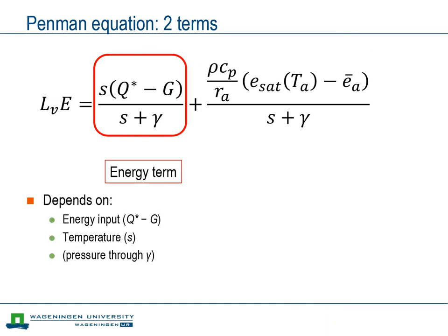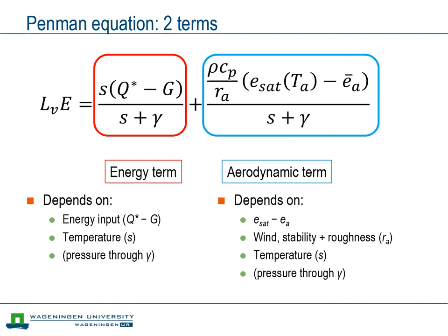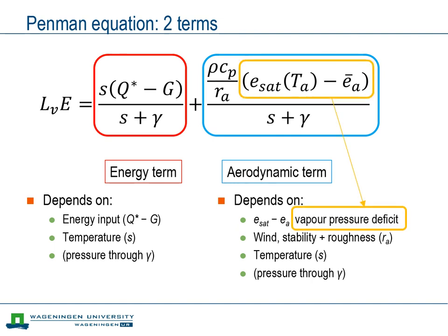So what do these terms depend on? The energy term depends primarily on the available energy, and furthermore temperature has an effect through the slope of the saturated vapor pressure function. The aerodynamic term primarily depends on the difference between saturated vapor pressure and actual vapor pressure — also called the vapor pressure deficit — and furthermore, wind speed, stability and roughness affect the aerodynamic resistance.